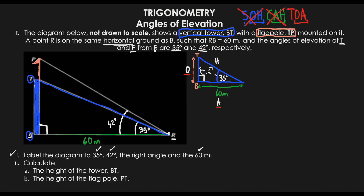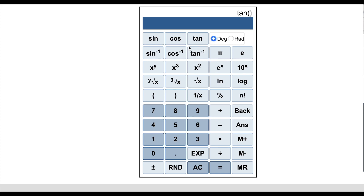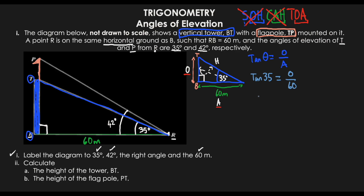So the formula is: tan(angle) = opposite over adjacent. Therefore, tan(35°) = opposite over 60. We need to calculate tan(35°) using a scientific calculator. Tan 35 gives us 0.700 — the next digit is less than 5 so it stays as 0.700. So we can say tan(35°) = 0.700 = opposite over 60.